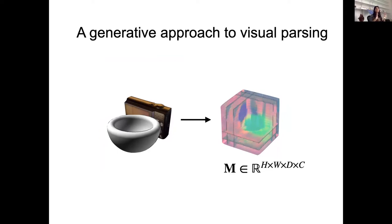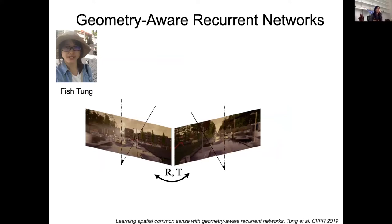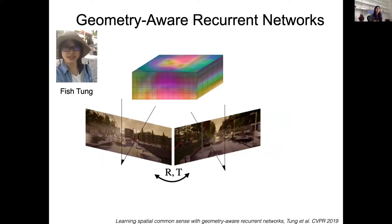Instead of looking at the 2D pixel image, we learn a mapping from that 2D pixel image to a 3D feature map — essentially a 3D grid with width, height, and depth, where every grid point holds a feature vector. That feature vector describes appearance, geometry, and physical properties of the scene at that particular location. For the last two years we've been working on this architecture. We call them geometry-aware networks that take a sequence of images, estimate ego-motion (3D rotation and translation between them), lift each image to a 3D feature map, and aggregate those maps.